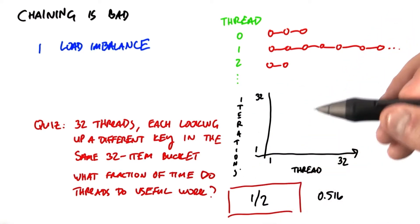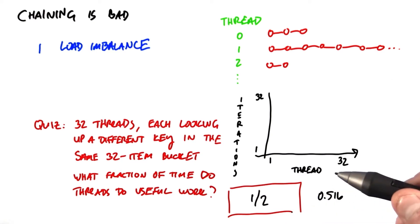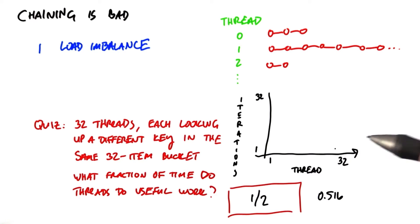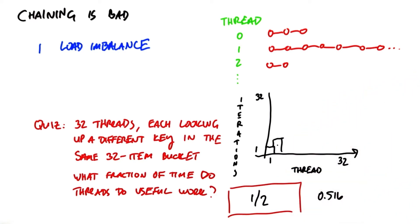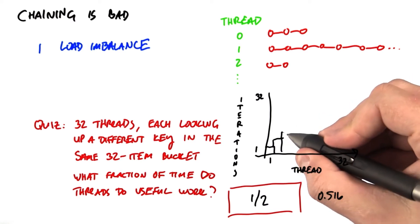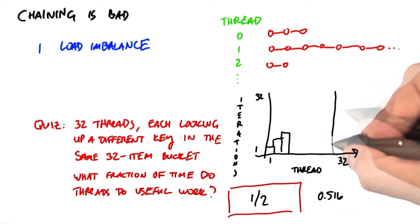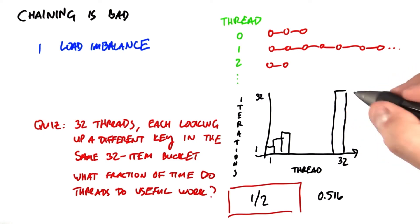And so we know that one thread will find its answer on the first iteration, the next thread will find its answer on the second iteration, and so on. So the first thread finds its answer on the first iteration, the second thread will find its answer on the second iteration, and so on. So eventually, the last thread will take 32 iterations to find its answer.